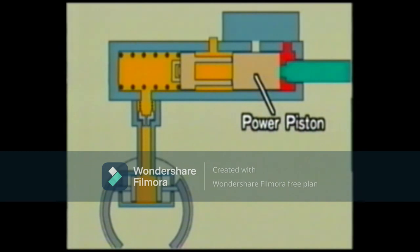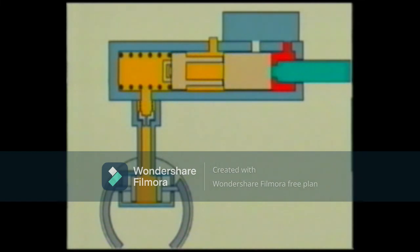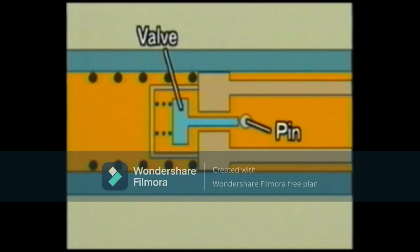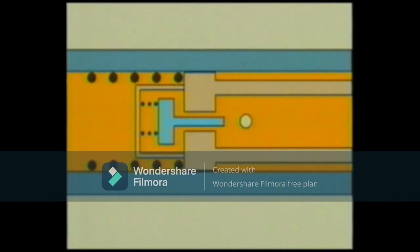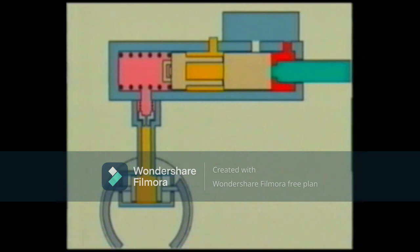As the power piston moves to the left, it causes the master cylinder piston to move to the left as well. At the left end of the master cylinder piston, there is a valve. This valve, which was pushed open by a pin, is now pushed to the right by the spring as the master cylinder piston moves left, closing the passage. The oil in the master cylinder then opens the outlet valve and enters the wheel cylinder to apply the brake.